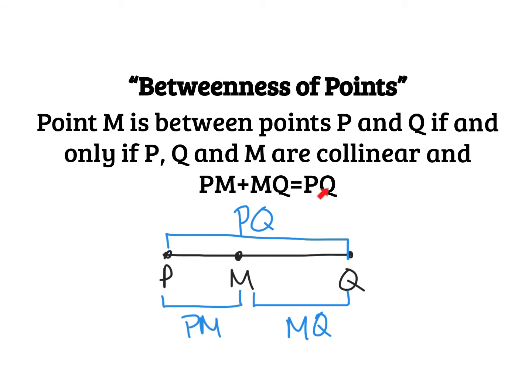Adding the two smaller distances will always give you the total. And this is what we're going to talk about today. I'm going to do a couple examples to show you how this is applicable and how you solve problems using this betweenness of points theorem.